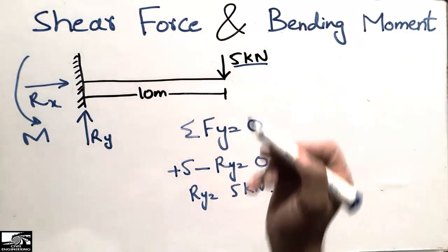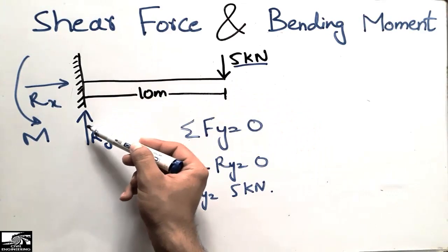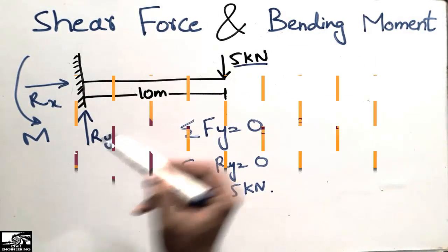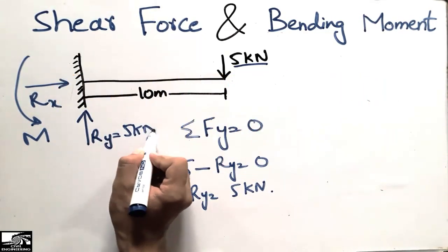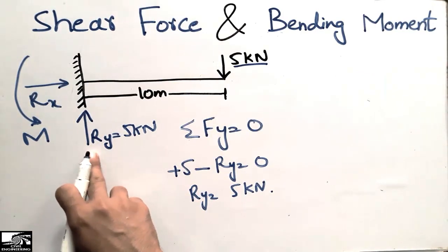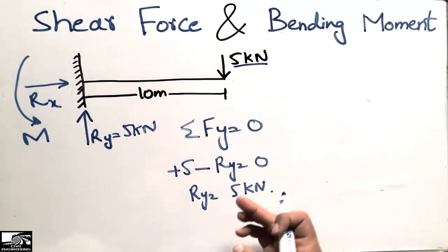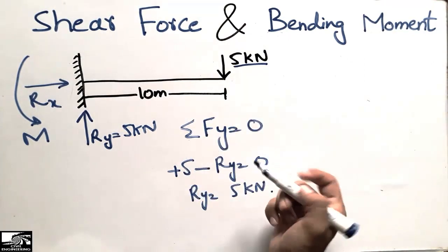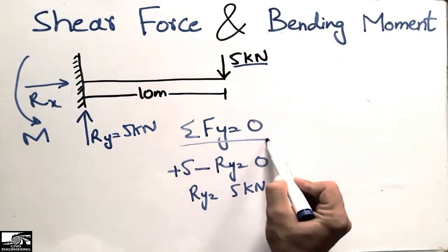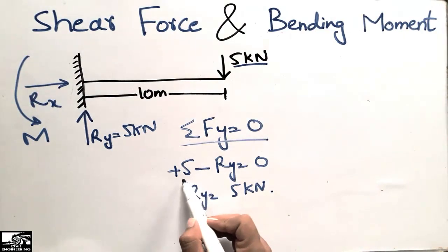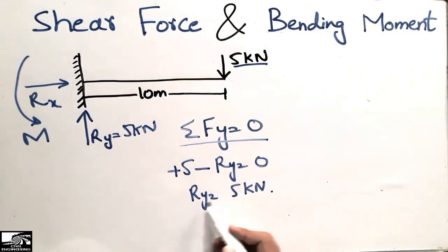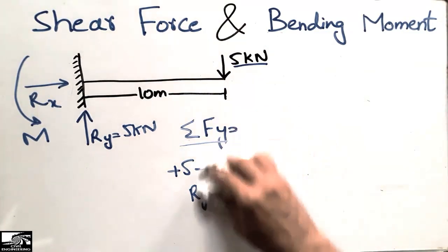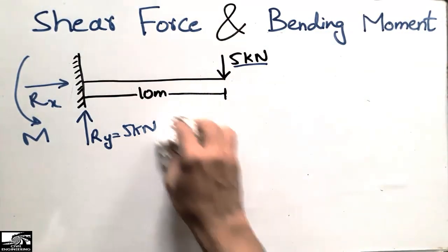This means the entire vertical reaction is carried by the support, with Ry equal to 5 kilonewtons. The 5 kilonewton load acts downward and Ry acts upward, confirming Ry = 5 kilonewtons. Now I will draw the shear force and bending moment diagram.